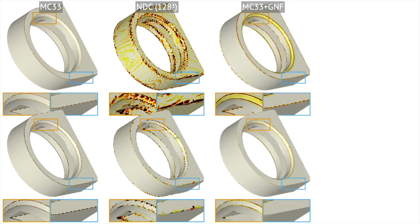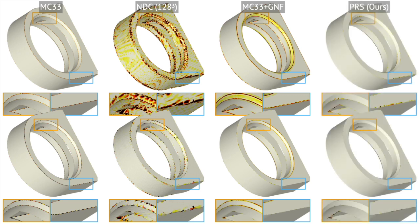Standard mesh extraction methods often blur sharp features. State-of-the-art learned techniques do not scale beyond 128-cube voxel grids. Post-processing meshes by normal filtering often results in surface distortion. Our algorithm accurately reconstructs sharp features on meshes at arbitrary resolution.